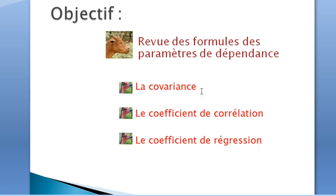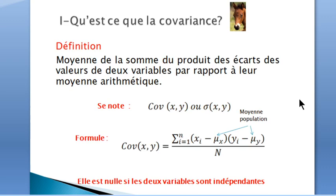This includes the covariance, the correlation coefficient, and the regression coefficient. By definition, the covariance is the average of the sum of the product of the deviation of the values of two variables from the arithmetic mean. It is noted as covariance XY or sigma XY, with the formula presented, where Xi and Yi are the performances of individual i, varying from one to n, and mu X and mu Y are the means of the two variables.